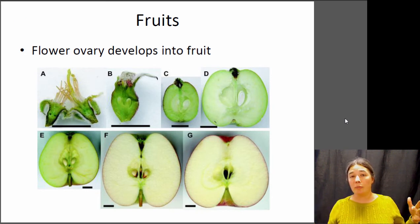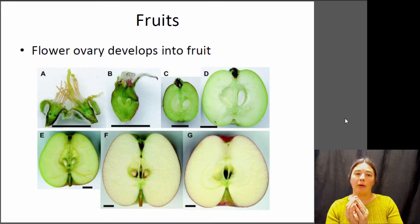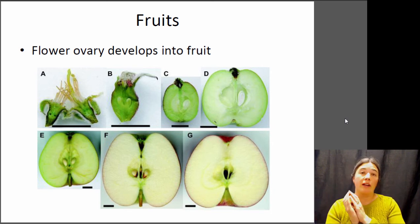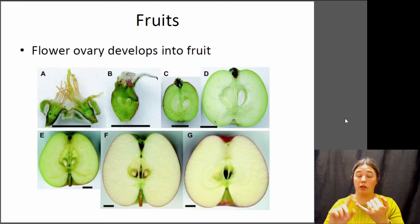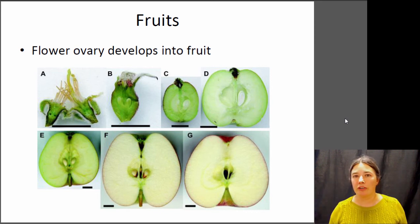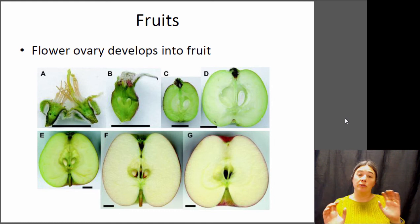Within the angiosperms, seeds are contained within the ovary of the flower, and that ovary often develops into a fruit. The biological definition of a fruit is the developed ovary of the plant — so anything that has seeds in it is a fruit, including cucumbers, pumpkins, tomatoes, and obvious fruits like apples. 'Vegetable' does not have a biological definition, so many things we call vegetables are actually fruits.